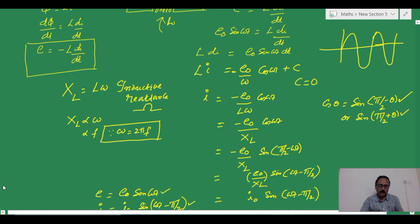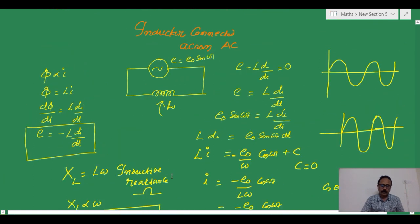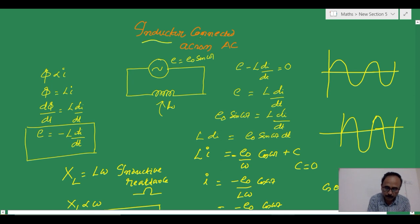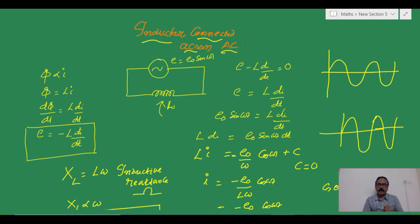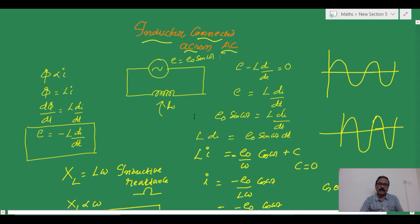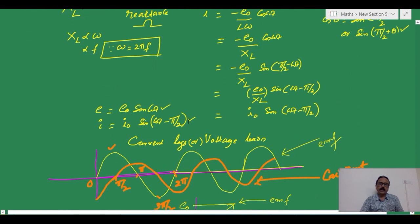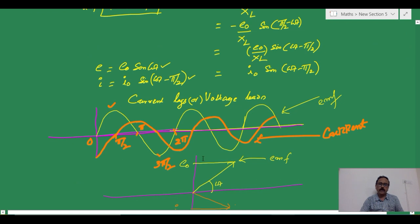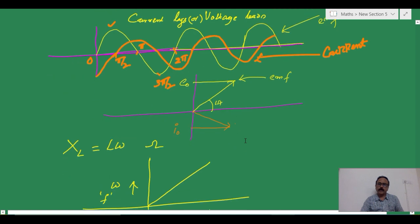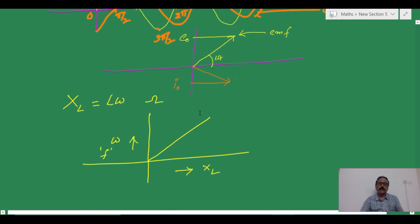To summarize: we started with the circuit of an inductor connected across AC. Then we wrote and solved the equation for the inductor. We could finally see that in an inductor, the current lags and voltage leads. We drew graphs for both voltage and current, drew the phasor diagram, and plotted the graph of XL versus ω.